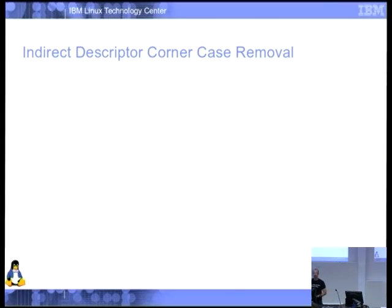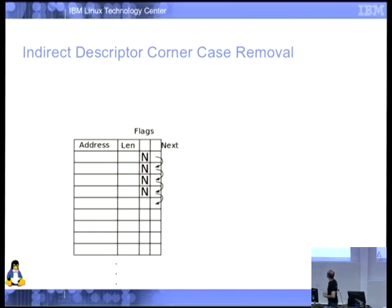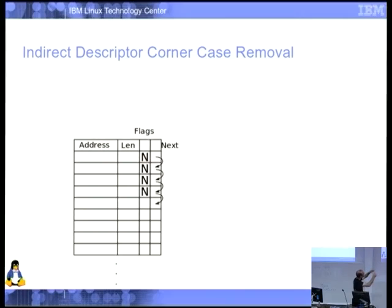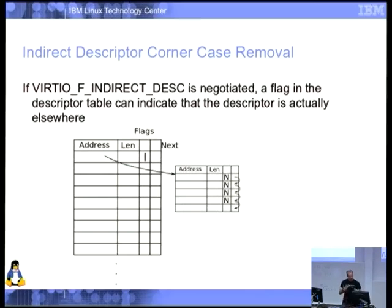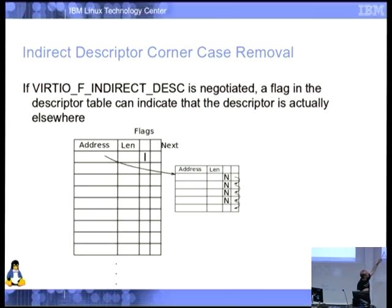The most obscure part of the standard — the indirect descriptor feature. You put descriptors in the table; each one points to bits of memory with a next-flag chain. If you're putting big buffers in, this chews up a lot of your descriptor table. So we added VIRTIO_F_INDIRECT_DESC: you set the indirect flag, and that descriptor actually points to a table of descriptors to follow. You use fewer main-ring descriptors, though you have to do a memory allocation. It particularly wins for block devices with very large requests.